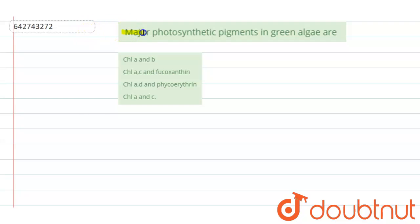The question says that major photosynthetic pigments in green algae are: chlorophyll a and b, chlorophyll a c and fucoxanthine, chlorophyll a d and phycoerythrin, or chlorophyll a and c. So basically there are three types of algae: green algae...